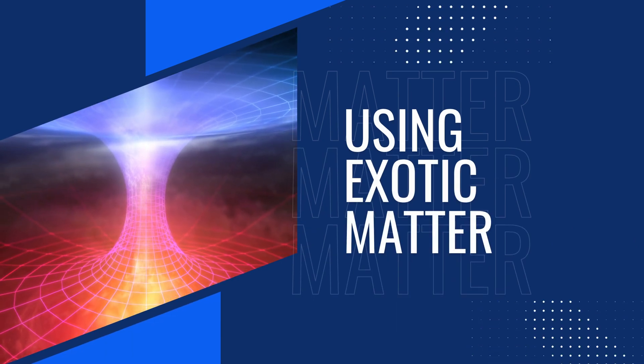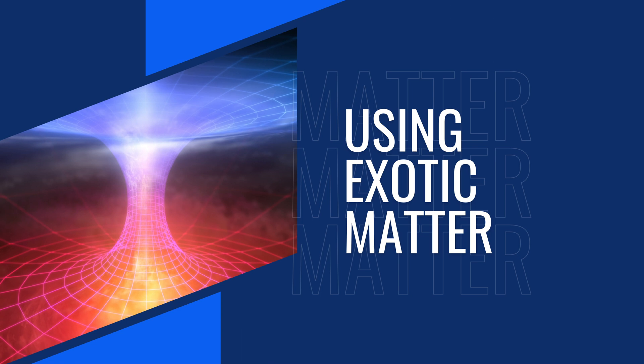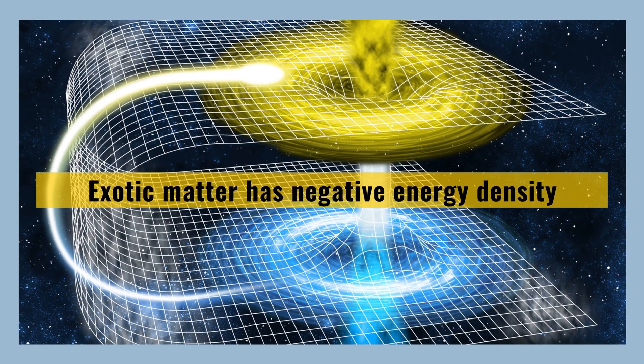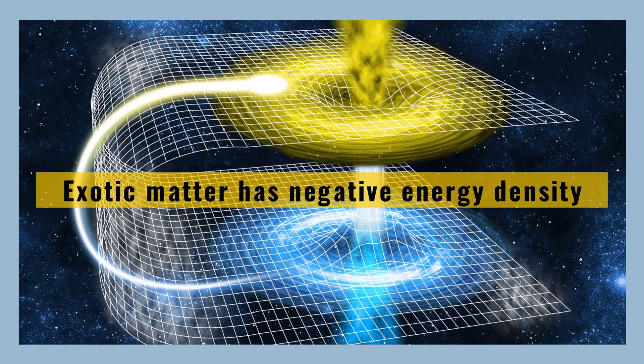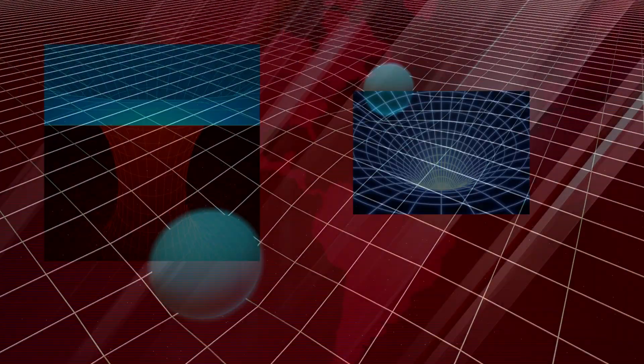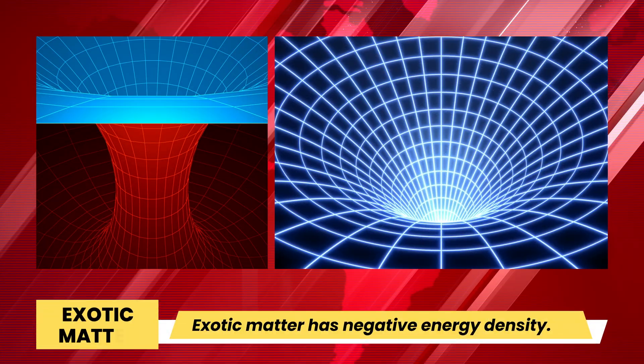Another proposed method for creating wormholes involves the use of exotic matter. Exotic matter is a hypothetical form of matter that has negative energy density. If we could create and control exotic matter, we could use it to create the curvature in space-time needed to form a wormhole.